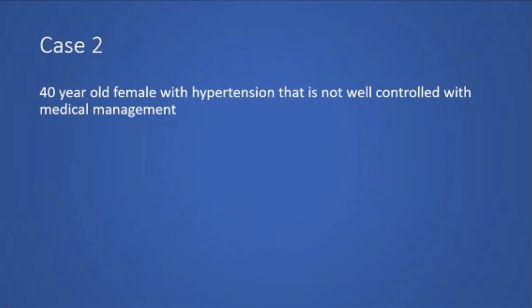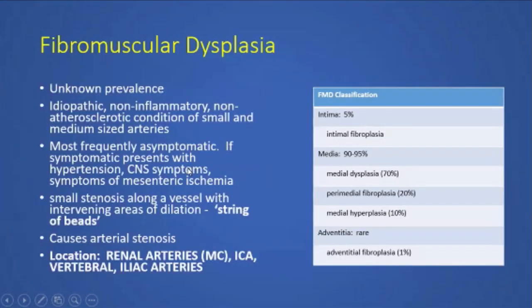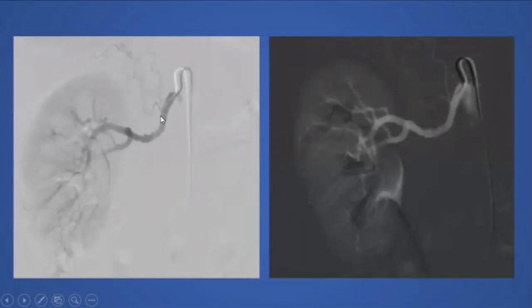The next case is a 40-year-old female with hypertension not well controlled with medical management. We took this patient to angiography and used a reverse curved catheter to select the renal artery. Digital subtraction angiography demonstrates multiple abnormalities — multiple areas of narrowing followed by dilation — a pretty classic appearance for fibromuscular dysplasia, with alternating areas of stricturing followed by dilation.